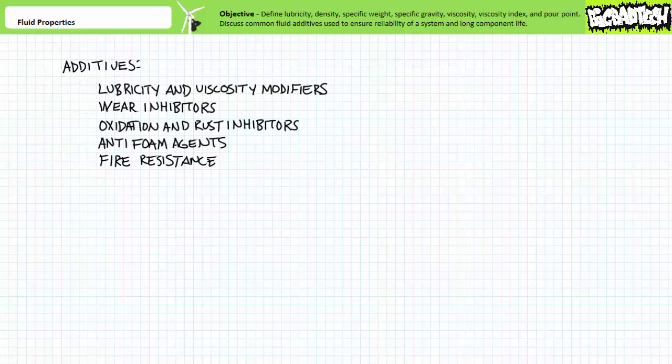Finally, note very rarely is oil in its natural undoctored state employed in a hydraulic system. Depending upon application, a range of additives can often be included. Additives might include, but are not limited to, lubricity and viscosity modifiers, wear inhibitors, oxidation and rust inhibitors, anti-foam agents, and chemicals to increase fire resistance.